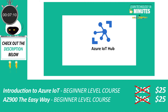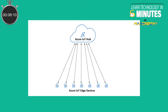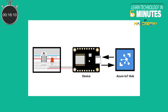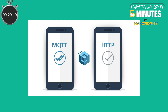Azure IoT Hub is a cloud-hosted service that helps establish secure communication between an IoT application and the device. Any device can be added to the IoT Hub as an IoT device. Several messaging protocols like MQTT, HTTP, etc. are used to transmit data from device to cloud and vice versa.